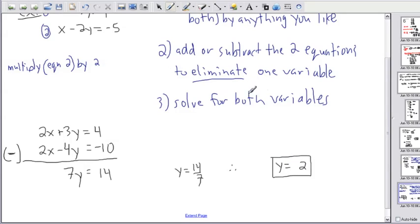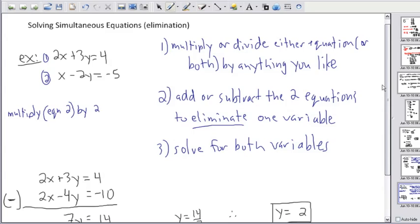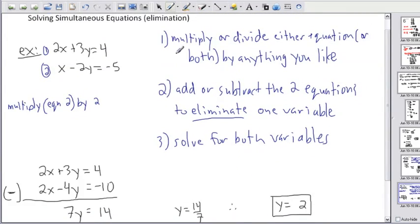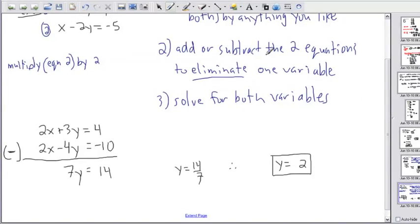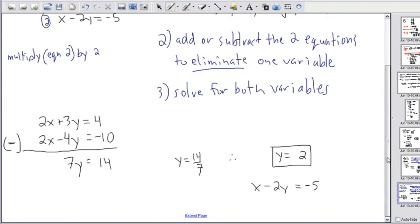So I've found one variable. I know what y is now. I need to find something for x. I need any equation that I can find for x. Maybe I'll use this second one here because it seems easier to get x by itself. This equation right here is going to have a fraction. I prefer not to work with fractions unless I need to. So I'm going to choose this second equation here and get x by itself. I'm going to work with x minus 2y equals negative 5.